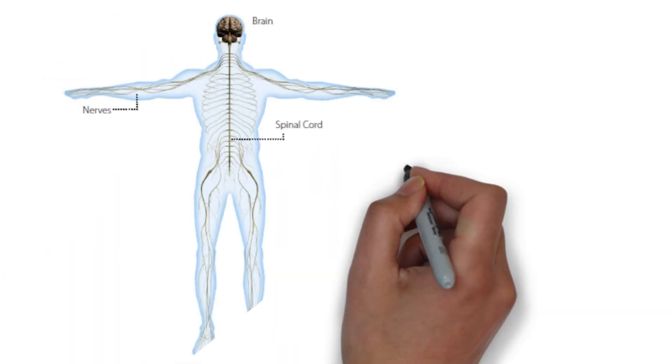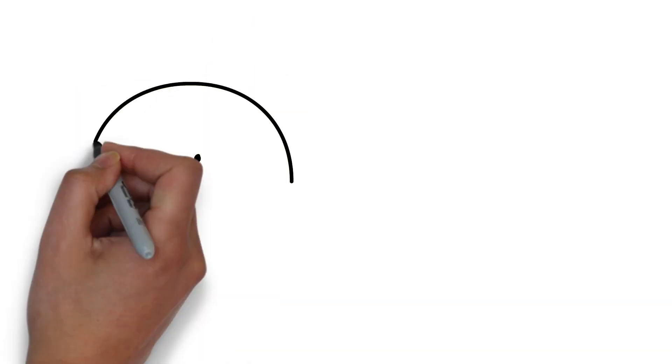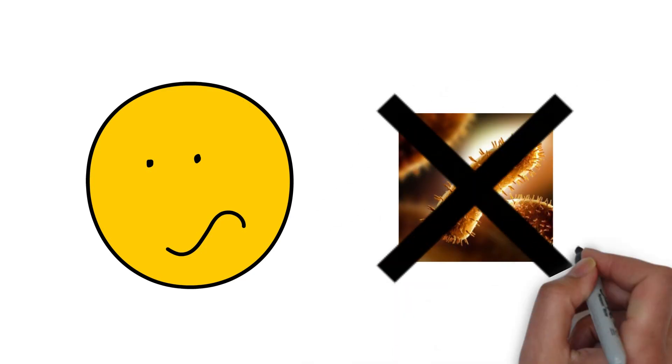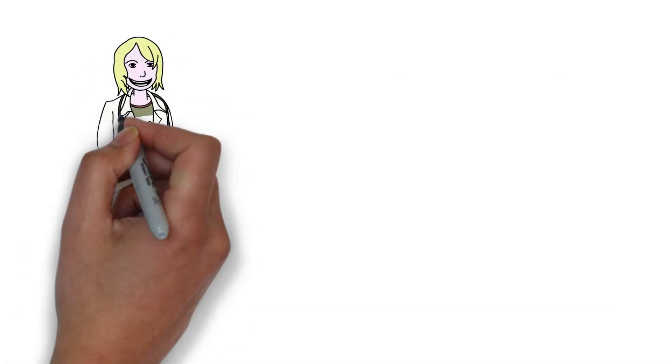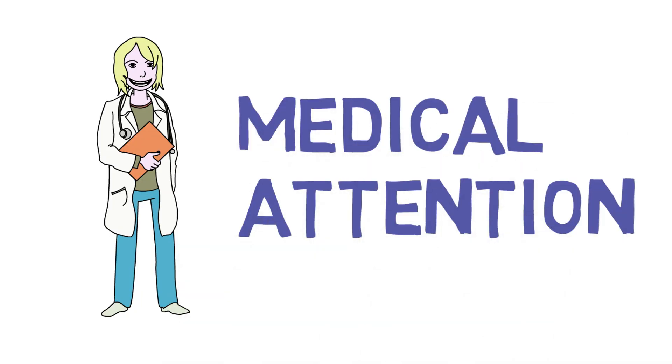Hopefully, you now understand what the rabies virus is, how it acts on the nervous system to cause its symptoms, and how vaccines can be used to prevent it. Although rabies is a frightening disease, we do have countermeasures to prevent it. So remember, always seek immediate medical help when you get bitten by an animal.